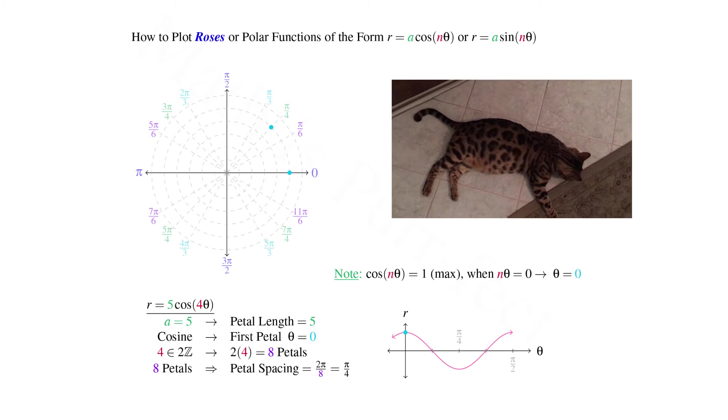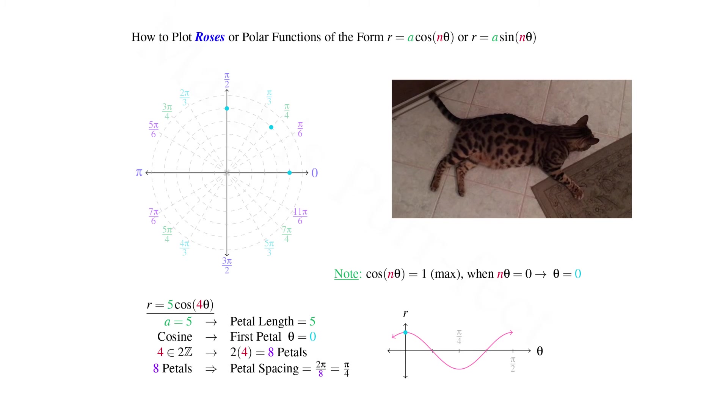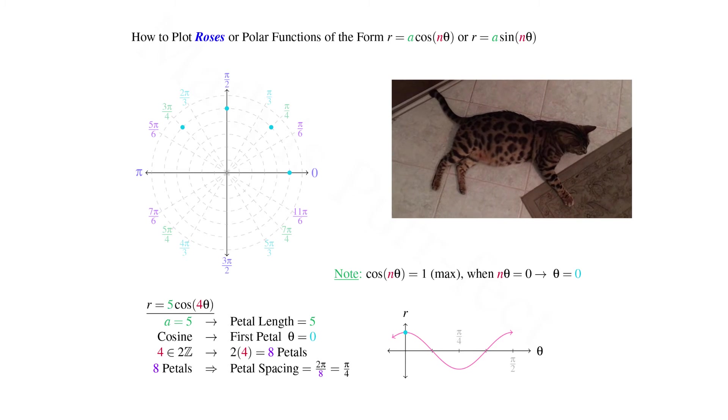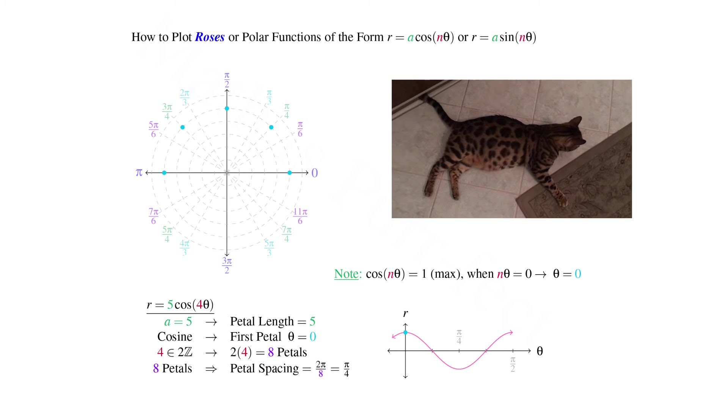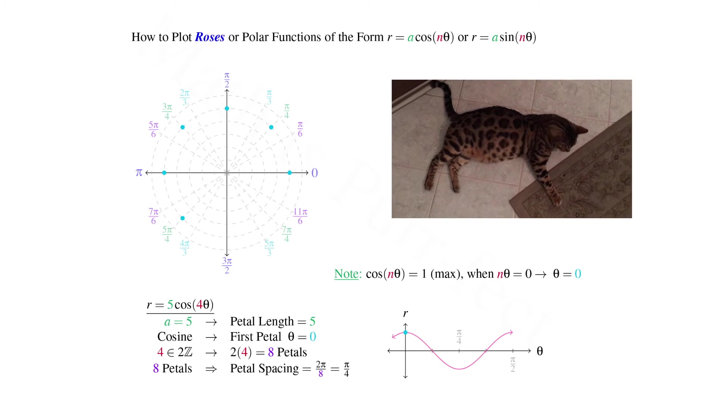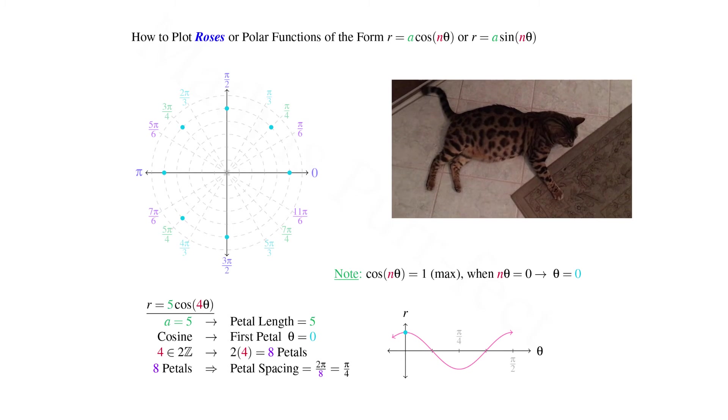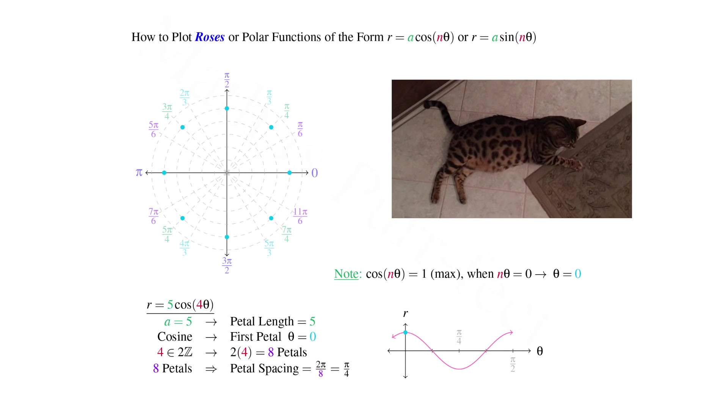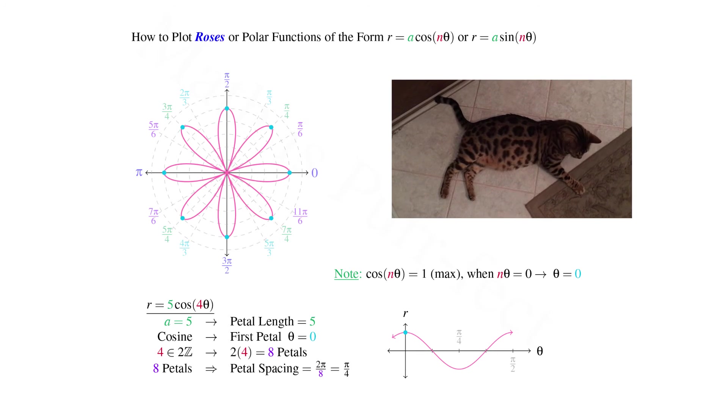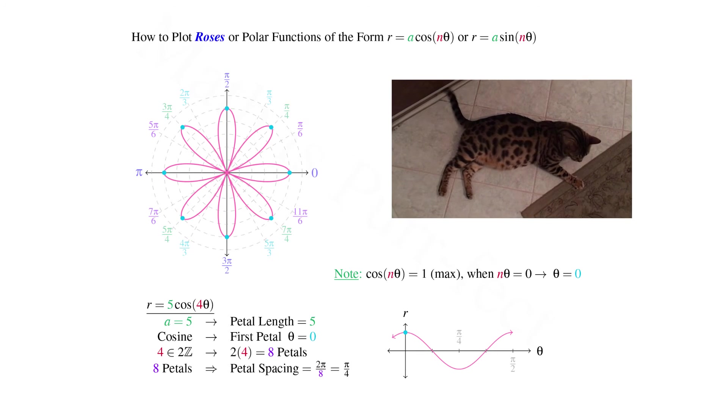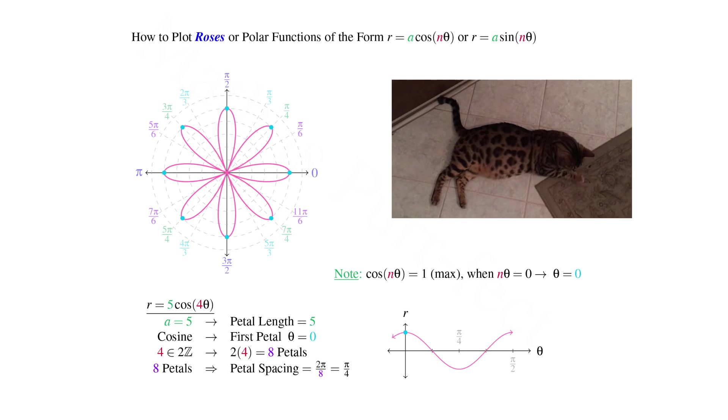Given that each petal is π/4 from the previous one, we can indicate the locations of each subsequent petal by placing blue dots. Hence our petals will be in the 4 cardinal directions as well as all 45 degree reference angles. Connecting the rose through the pole, we create our 8-petaled graph.